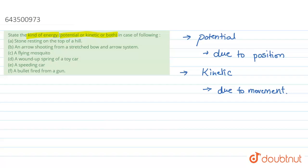Now let's start and try to answer them one by one. The first one is a stone resting on top of a hill. When we say top of hill, it's a position. It's the energy possessed due to position, so the answer will be potential.